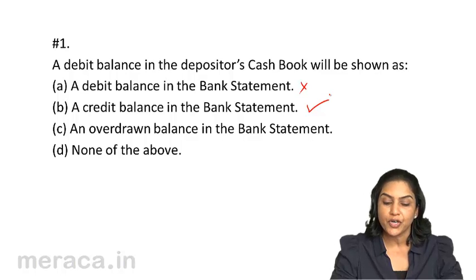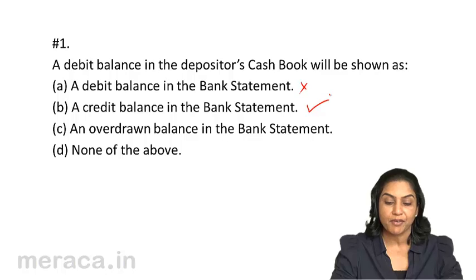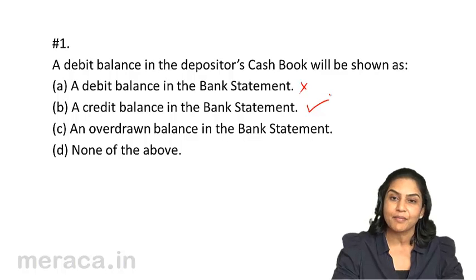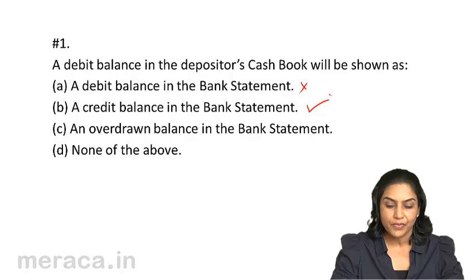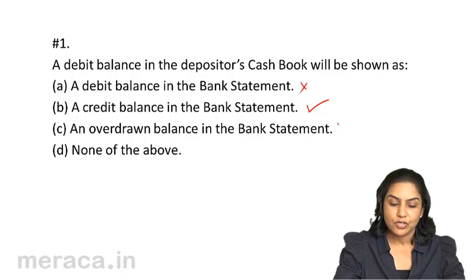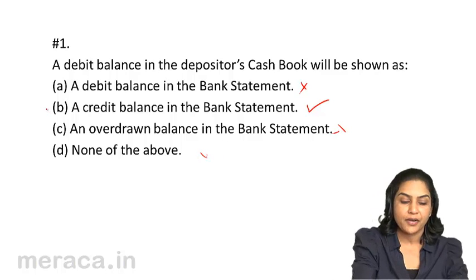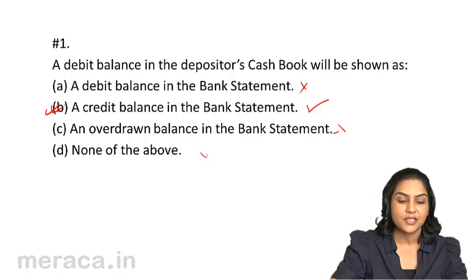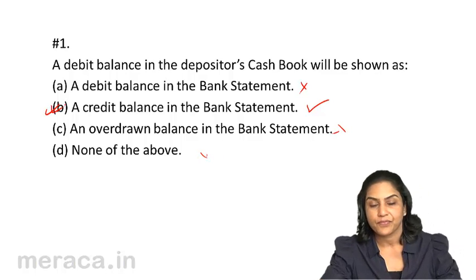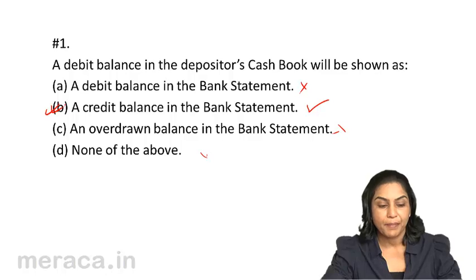No — if it's an overdrawn balance in the bank statement, it would have been a credit balance in the cash book. So this is also wrong. None of the above is also wrong. Therefore, our correct choice is B — answer 1B.